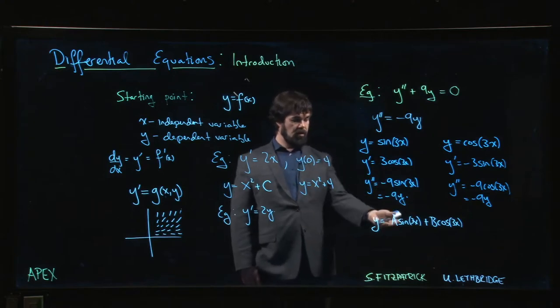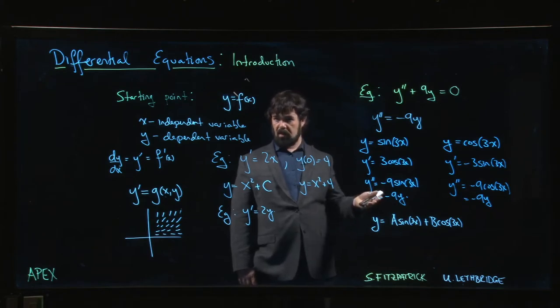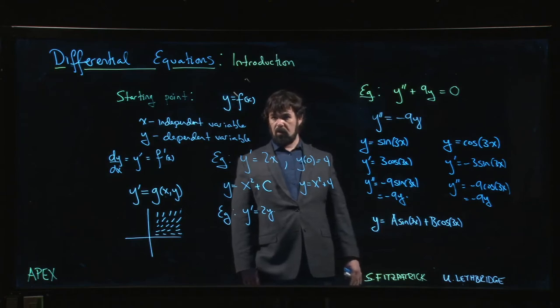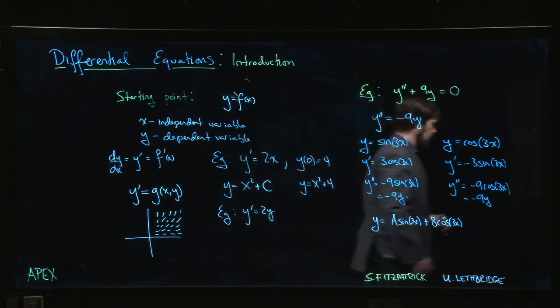So there are those sorts of games that you can play. So general solution turns out does look like this. Values for a and b are determined by initial conditions. In another course you'd learn exactly how to come up with this sort of answer.